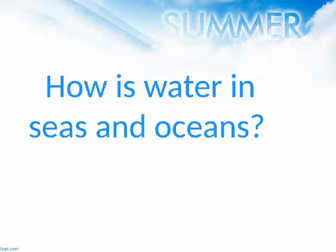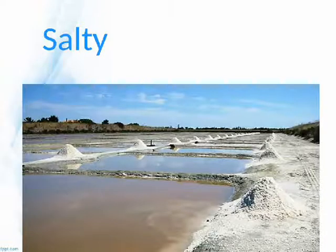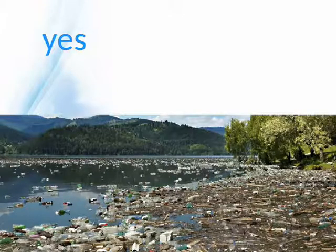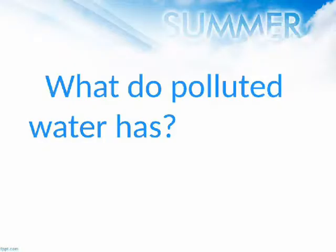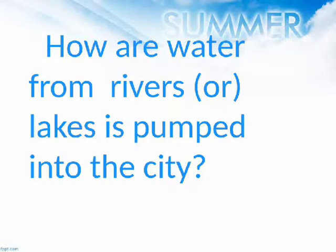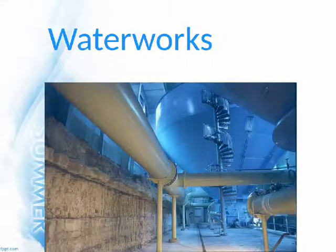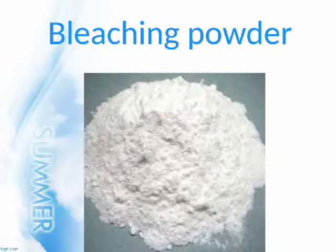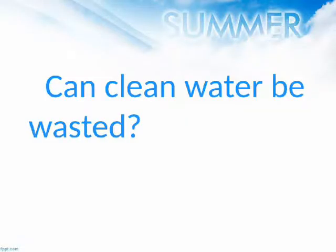How is water in seas and oceans? Salty. Is water polluted? Yes. What does polluted water have? Dirt and germs. How is water from rivers or lakes pumped into the city? Waterworks. What is added to kill germs in water? Bleaching powder. Can clean water be wasted? No.